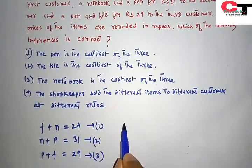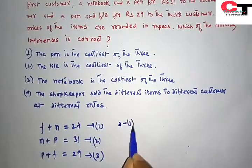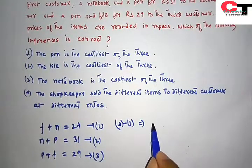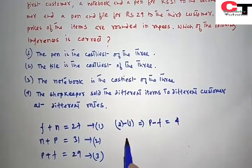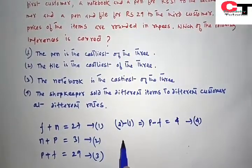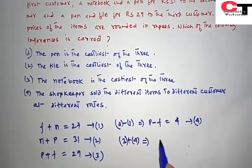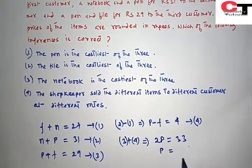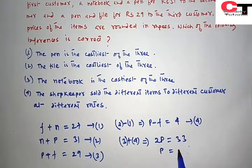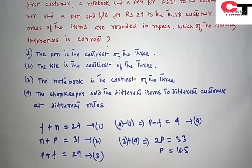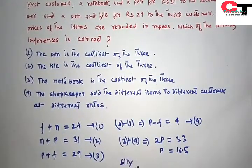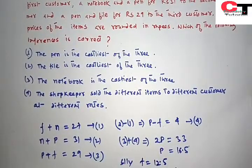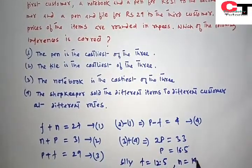So let's solve these three equations. Equation 2 minus 1, what we will get? 2 minus 4, P minus F equal to 4. Then 3 plus 4, we get 2P equal to 33, so P equal to 16.5. Similarly, we will get F equal to 12.5 and N equal to 14.5.